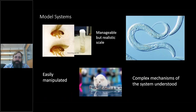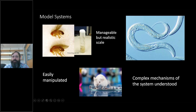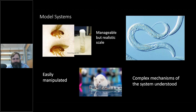Model systems are not a foreign concept in biology. Think of the Drosophila system used for genetics — we know how different genes are affected by selection. The nematode C. elegans: we know the fate of every single cell in that organism, so we can knock out certain genes and see how that affects development. And then the mouse model system for how mammals respond to different processes. All these model systems have three things in common: they're easily manipulated, they're manageable at a realistic scale, and because a lot of work has been done on them, we know the complex mechanisms of the system.